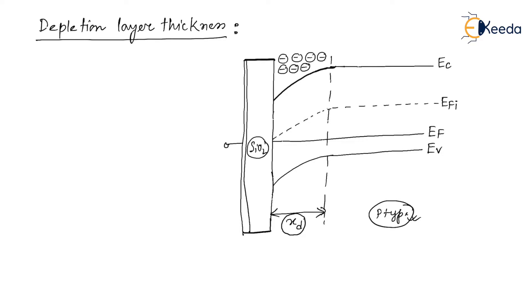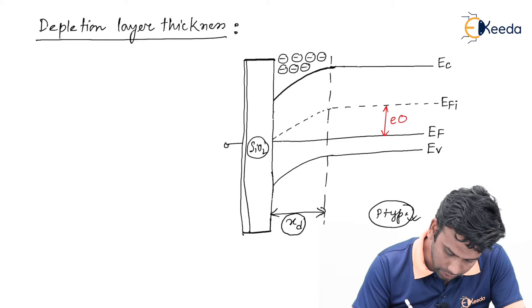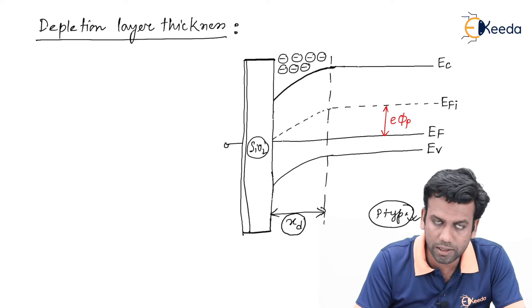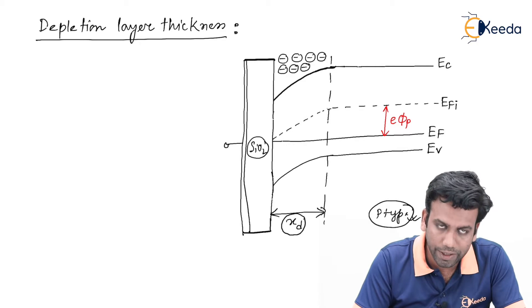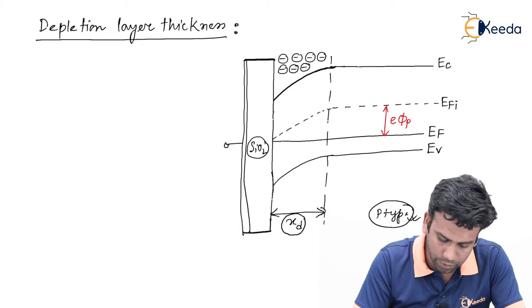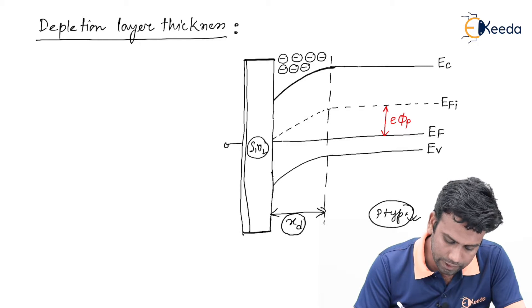If I denote this amount of energy as E phi p, where E is the electronic charge, that is 1.6 into 10 to the power minus 19 coulomb, and phi p is the energy difference between E Fermi and E Fermi intrinsic.